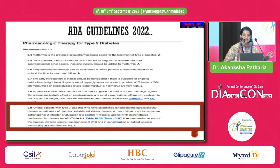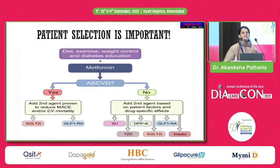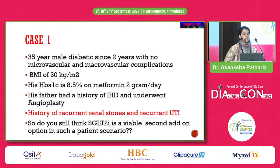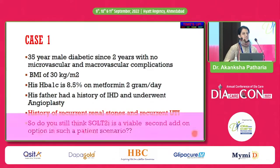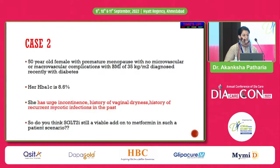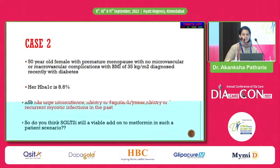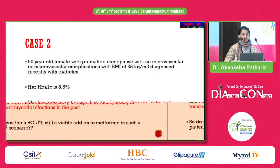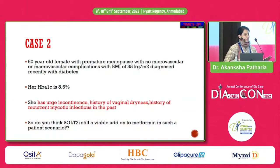The ADA itself advocates an individualistic approach — so how can we use SGLT2 inhibitors as a blanket therapy for all type 2 diabetes? Case 1: A 35-year-old male, diabetic for two years, no complications, BMI 30, HbA1c 8.5%, on metformin 2g/day with significant family history — you'd love to give SGLT2 inhibitors. But he has recurrent renal stones and recurrent UTI. Is SGLT2 still viable? Case 2: A 50-year-old female with premature menopause, BMI 35, recently diagnosed, but with urge incontinence, vaginal dryness, and recurrent mycotic infections. Would you risk SGLT2 inhibitors here?